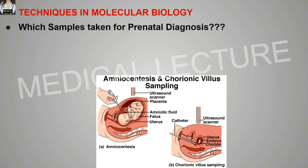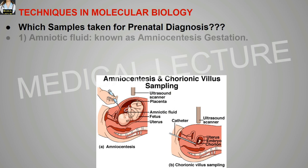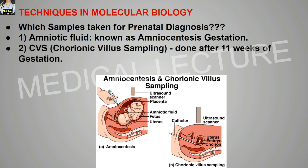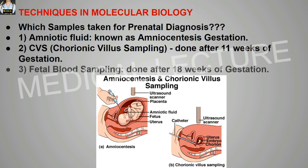Which samples are taken for the prenatal diagnosis? There are basically three: first, amniotic fluid, known as amniocentesis, after gestation. Second, CVS or chorionic villus sampling, after 11 weeks of gestation. And third, fetal blood sampling, after 18 weeks of gestation.